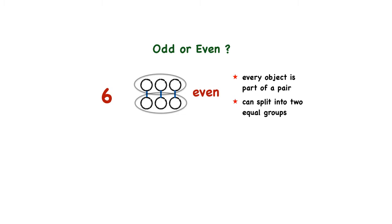Now, let's take a look at another number, the number nine. If we try to make pairs with nine circles, it turns out that one circle isn't part of a pair. That means that nine is an odd number, because one object isn't part of a pair.